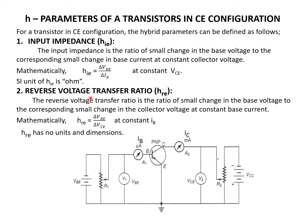The second parameter is the reverse voltage transfer ratio HRE. This is the ratio between small change in input voltage to small change in output voltage — input voltage by output voltage — hence it is called the reverse voltage ratio. Since it is a ratio of voltage to voltage, HRE has no units or dimensions.